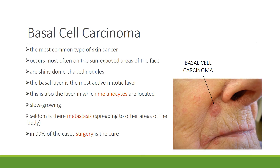Basal cell carcinoma is the most common type of skin cancer. You can see a picture of it here on the right side of the slide. It occurs most often on the sun-exposed areas of the face and its appearance is a shiny dome-shaped nodule. The basal layer is the most active mitotic layer, so it makes sense that this is where most skin cancers occur.